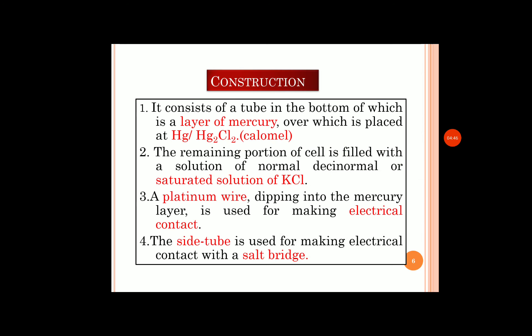To recollect the construction: it consists of a tube at the bottom in which a layer of mercury is placed, over which a paste of calomel — a mixture of mercury and mercurous chloride salt — is present. The remaining portion of the cell is filled with normal, decinormal, or saturated KCl solution. Based on the concentration of the KCl solution, the electrode potential of the calomel electrode changes. A platinum wire dipped into the mercury layer is used for making electrical contact. At the top, there is a porous plug through which saturated KCl solution can be added, and at the bottom, a porous disc serves as a salt bridge.